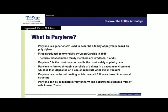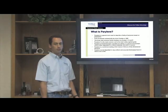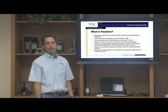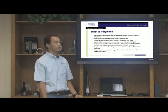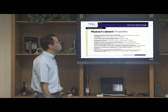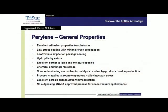Perylene is a vapor deposited plastic in the most general term. It's fully conformal to any surface that is introduced into the chamber. The general properties of the polymer are quite extraordinary.